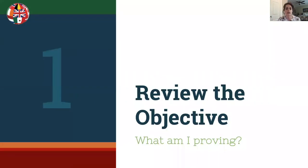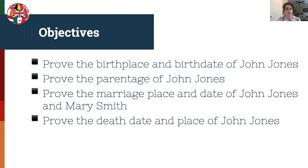The first step in organizing your writing is to review the objectives set at the beginning of the research and to define exactly what it is that you are proving in each proof throughout your report. If there's more than one objective, make a list of the objectives to prove in the report. Note that not all life events for John Jones are proven all at once. Each objective will need to be addressed separately in its own proof, though depending on the evidence, some proofs may work well combined, such as a birth proof and a parentage proof. This is for you, the researcher, to decide according to the evidence you're working with.